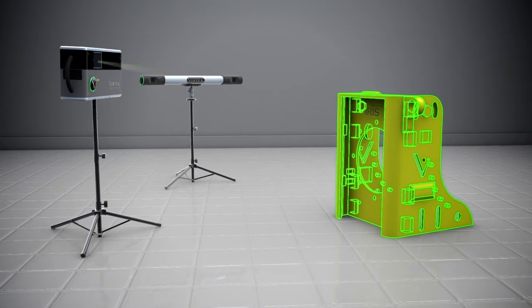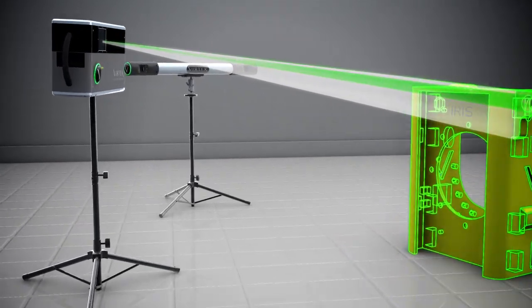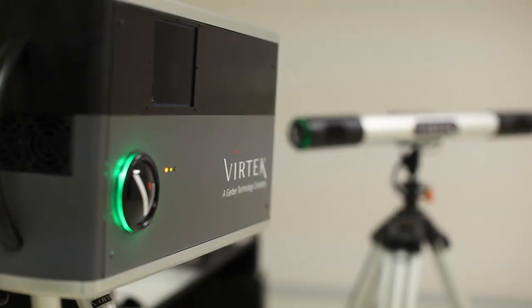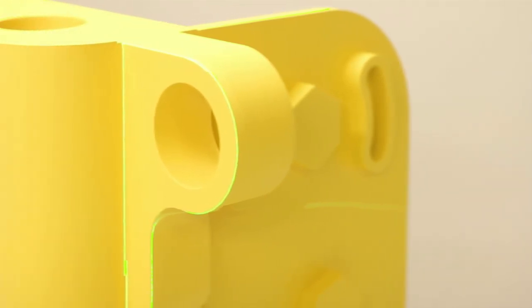With an accurate understanding of the part's position in three-dimensional space, the system can project assembly locations on any surface of the part. Compact and adaptable, the IRIS SPS can conform to even the most complex assembly.